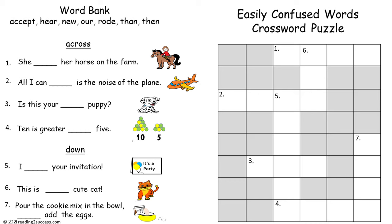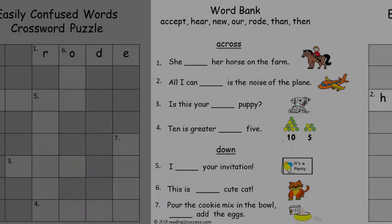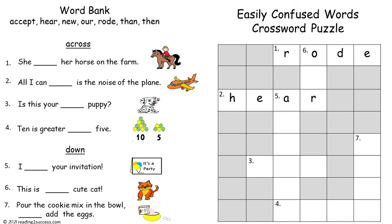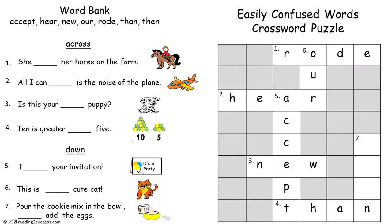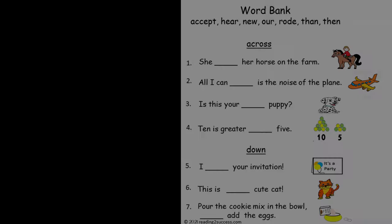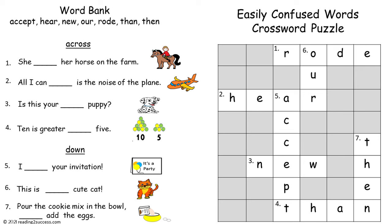For review, have kids complete the easily confused words crossword puzzle. The answers are in the word bank, with choices including accept, hear, new, our, road, than, and then. One across is road. Two across is here. Three across is new. Four across is than (T-H-A-N). Five down is accept. Six down is are. Seven down is then (T-H-E-N).